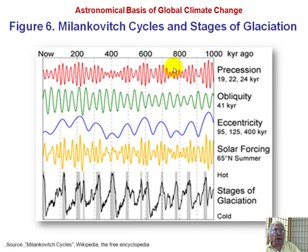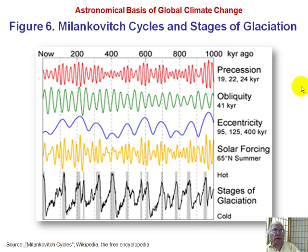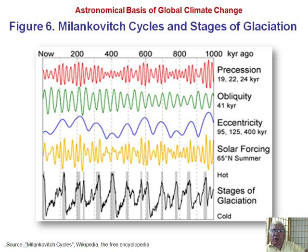On this slide we can see that precession has a period of roughly 20,000 years, obliquity roughly 40,000 years, and eccentricity on the order of 100,000 years. These are not constant-height perturbations — they vary, but they can all be calculated very accurately by Newton's equations. Together, they produce what is called solar forcing — the incident solar radiation as it changes with latitude. The latitude shown here is 65 degrees north, which is roughly the average edge of the glaciers.